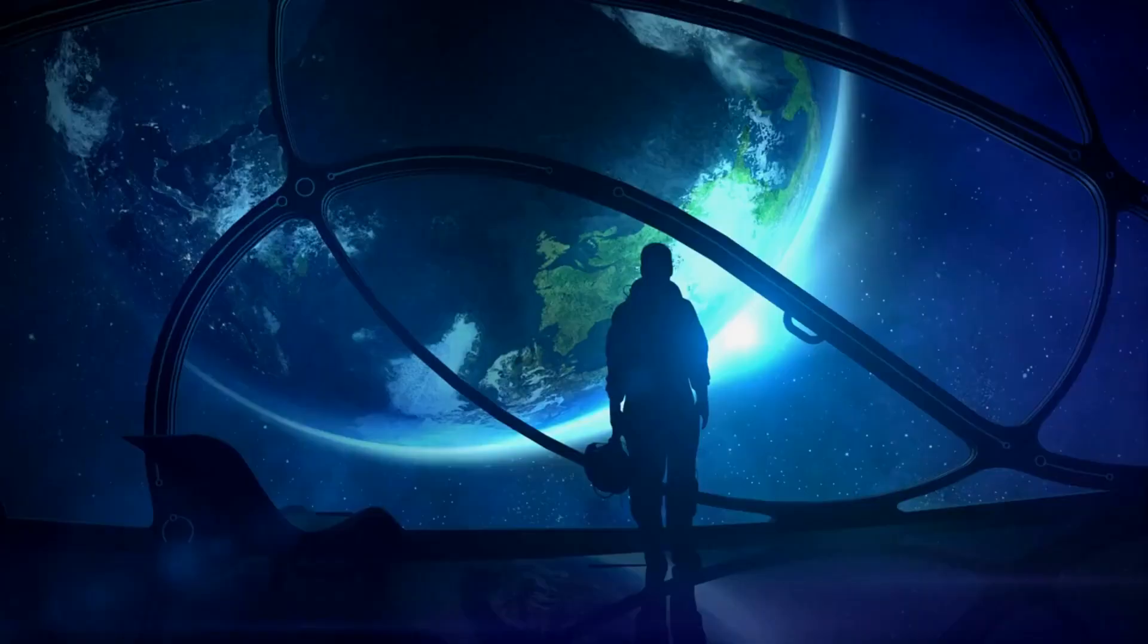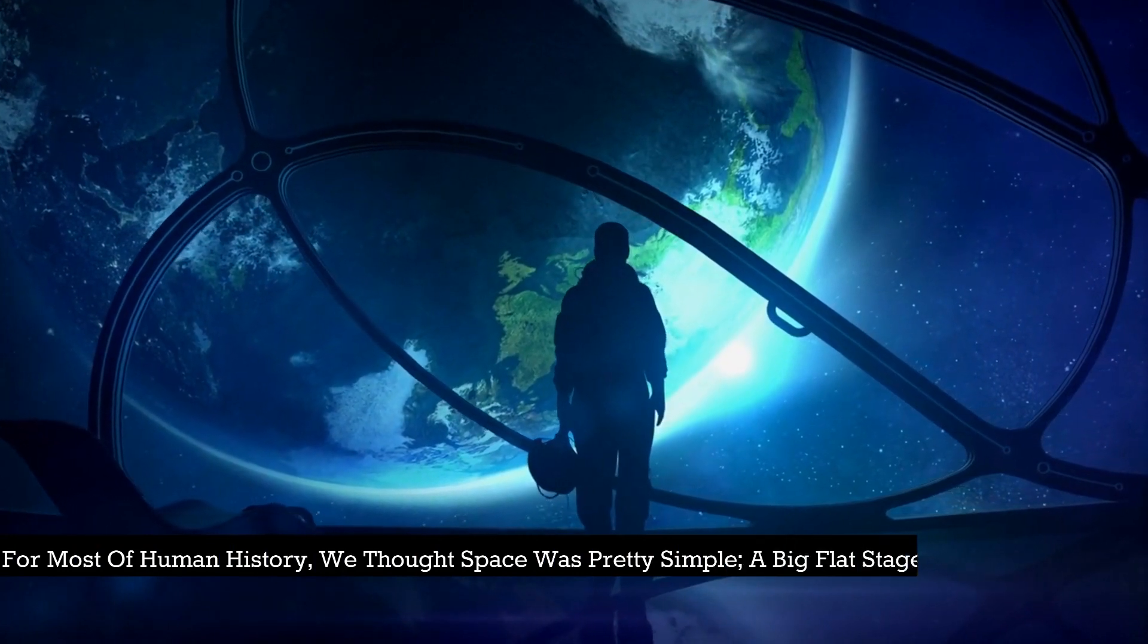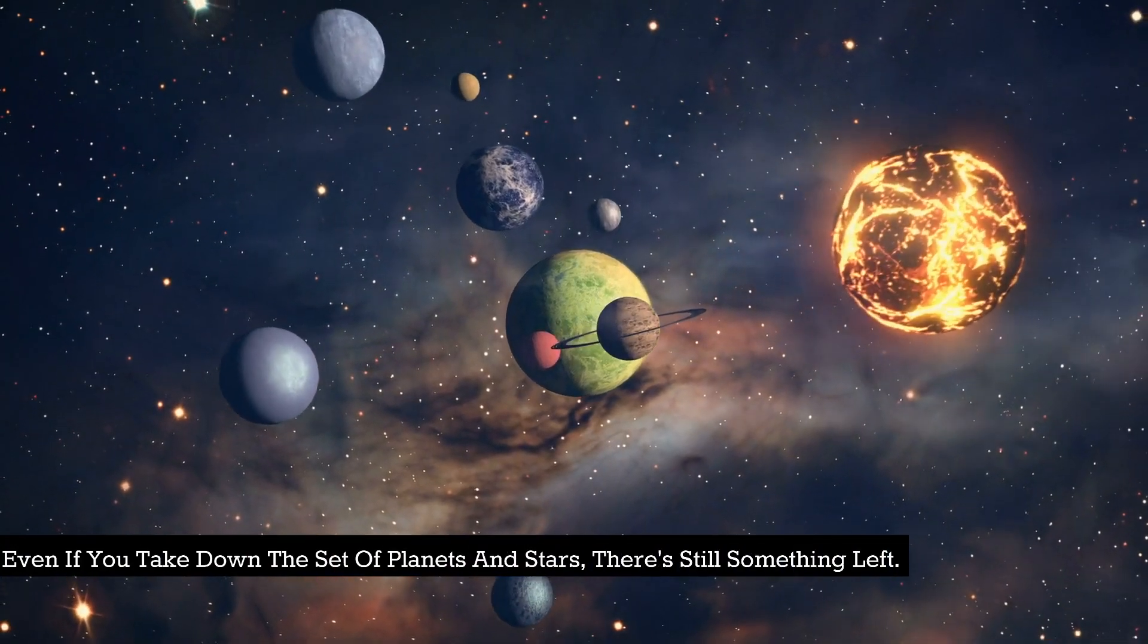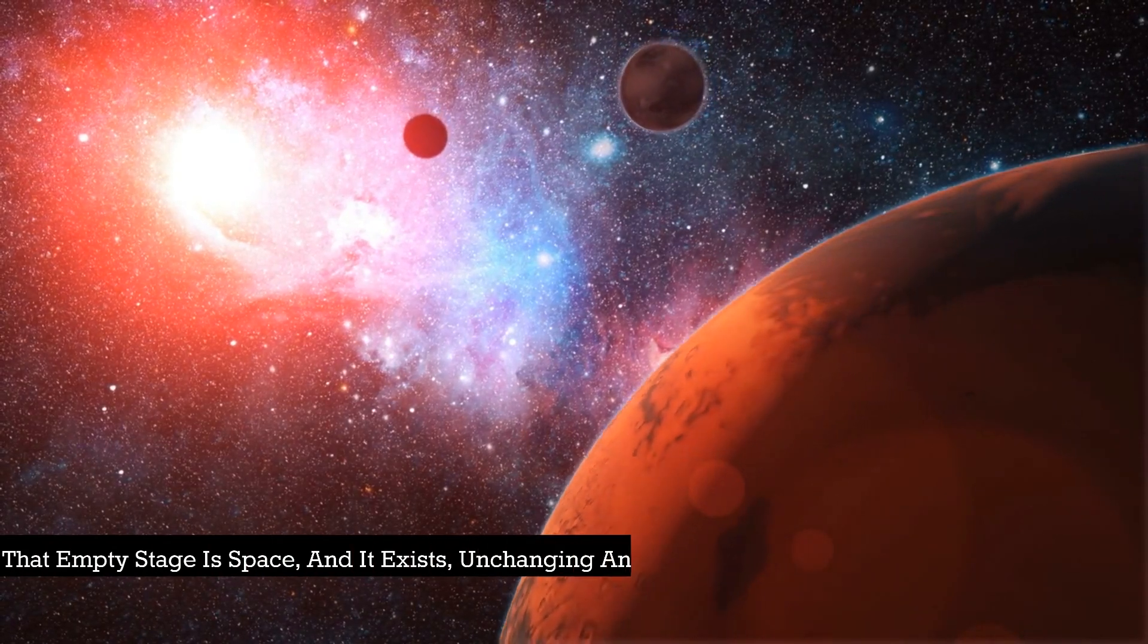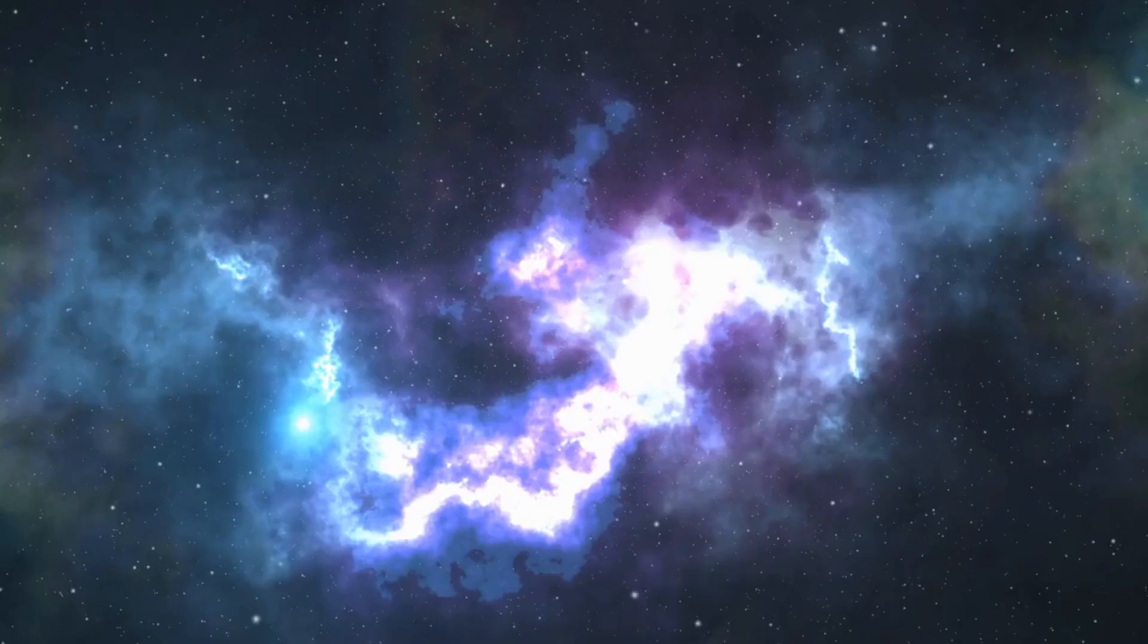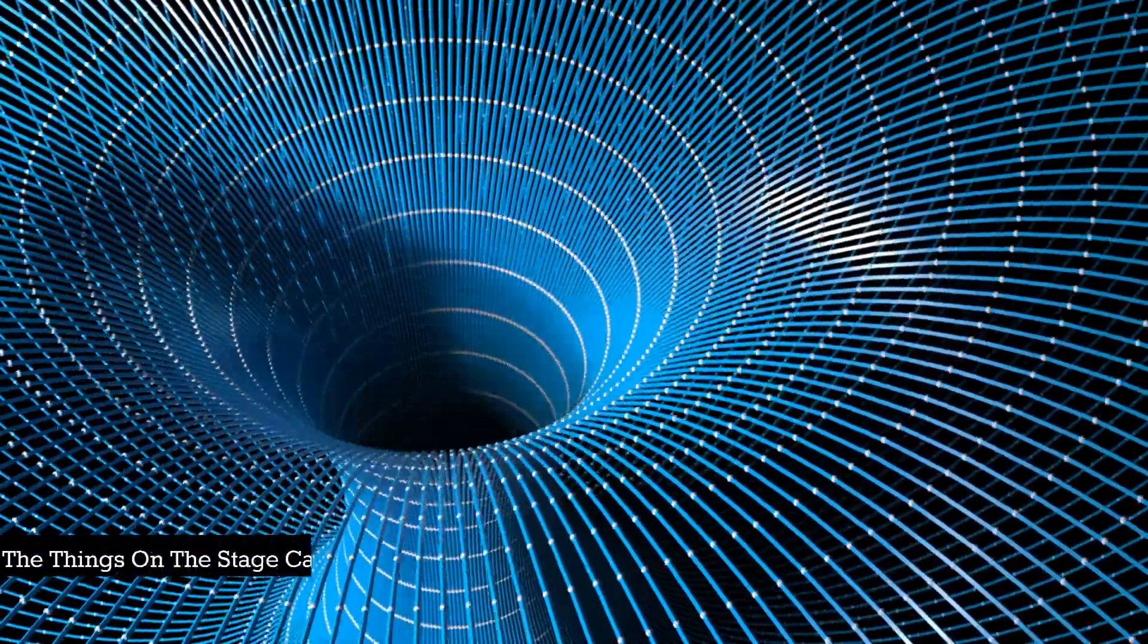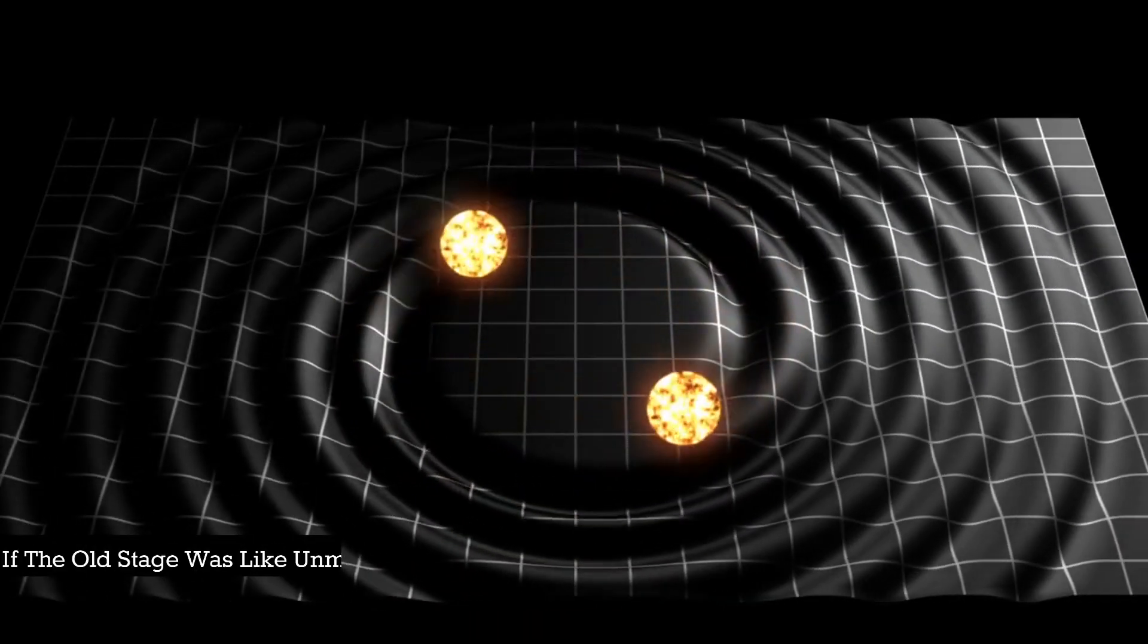For most of human history, we thought space was pretty simple - a big flat stage where the events of the universe unfold. Even if you take down the set of planets and stars, there's still something left. That empty stage is space, and it exists unchanging and eternal. Einstein's theory of relativity changed that. It says that space and time make up that stage together, and they aren't the same everywhere.